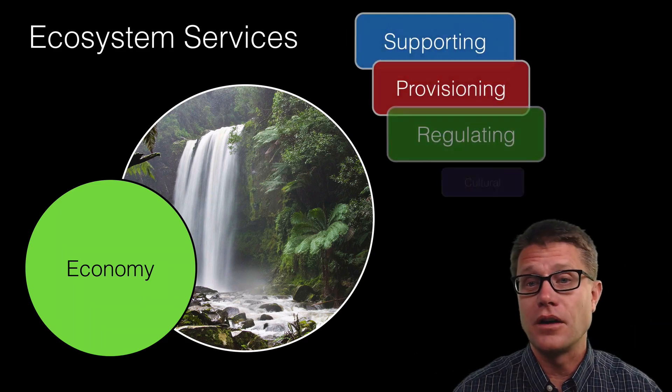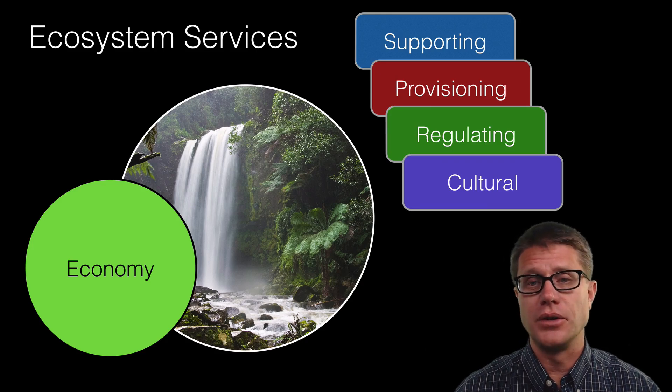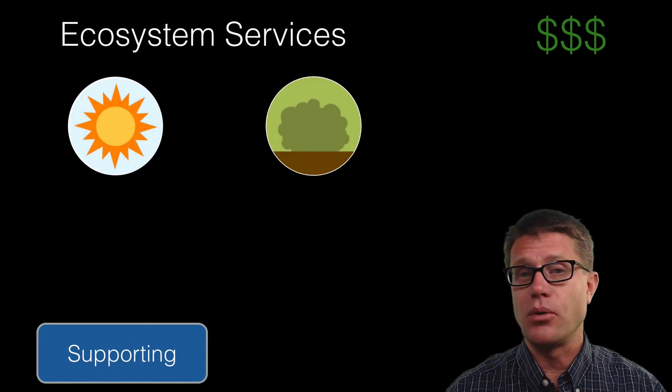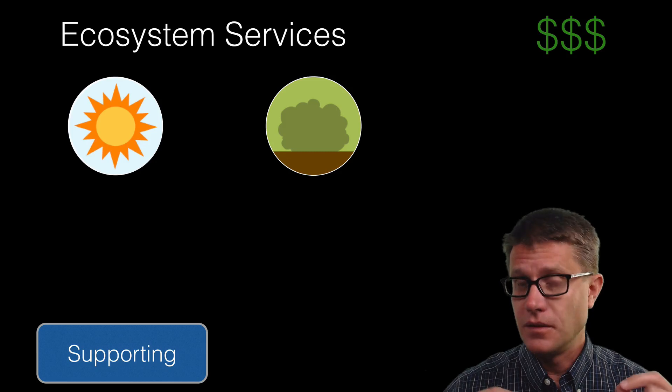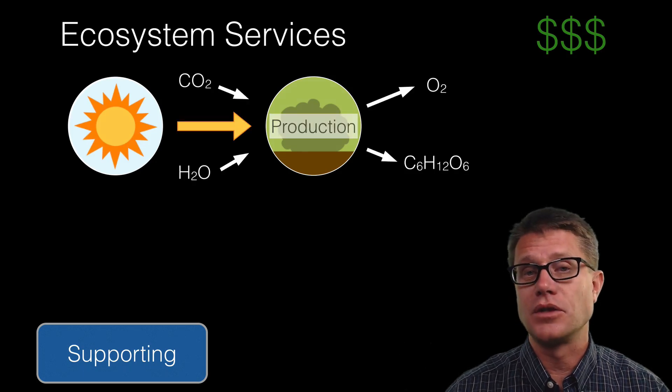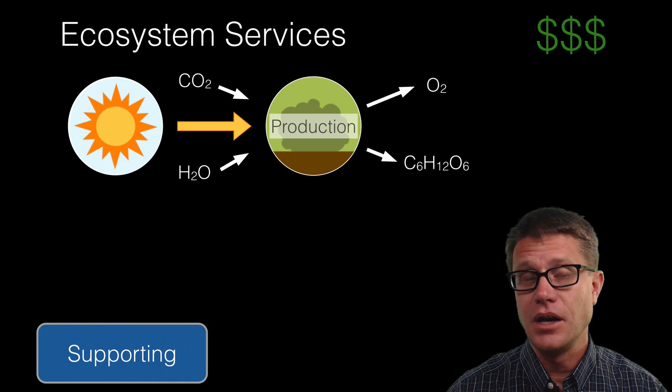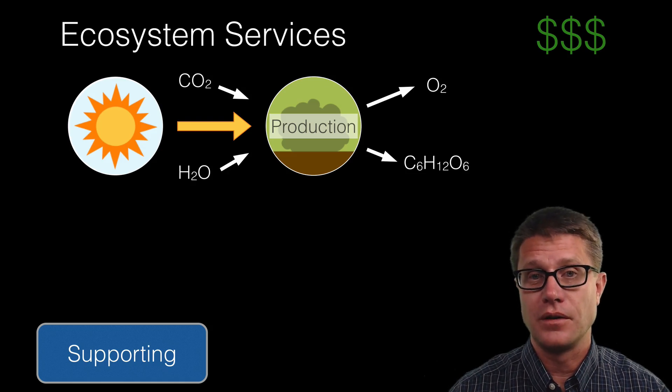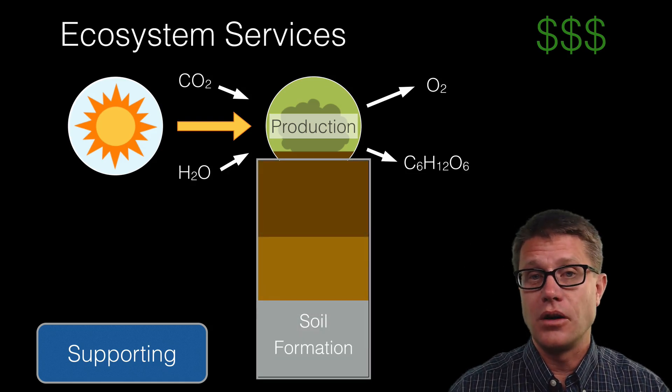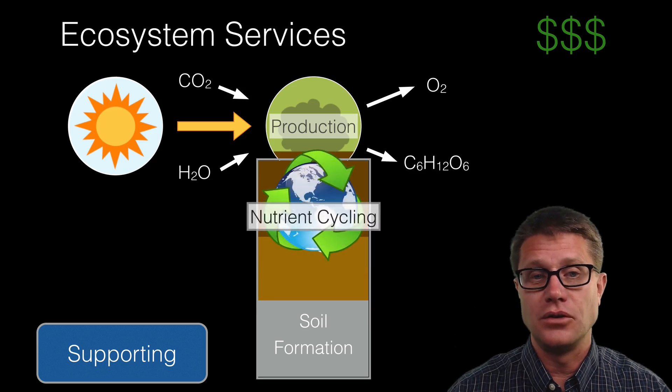If we were to say what are those? They are in these four areas. First of all they support us through production. In other words plants and the process of photosynthesis makes food and it also makes oxygen that we breathe. It also is making the soil that we use to grow our crops and it is recycling nutrients. These are all ecosystem services, things that the earth does for free that we utilize.